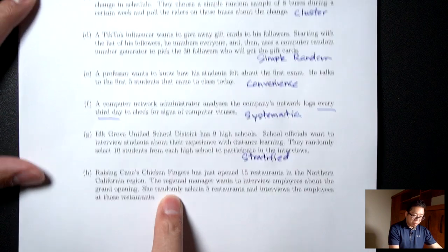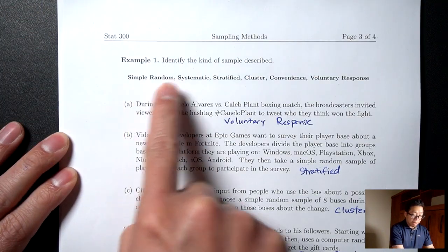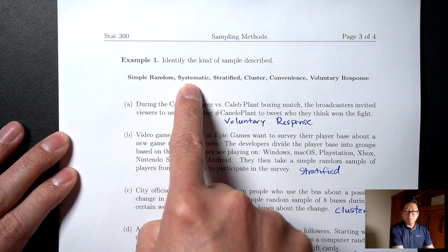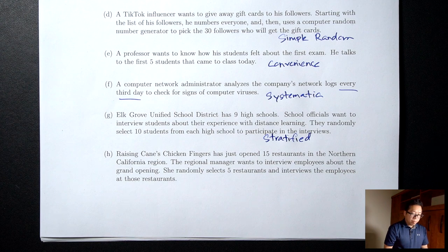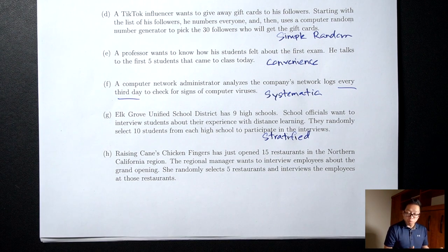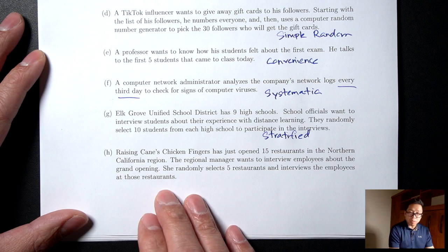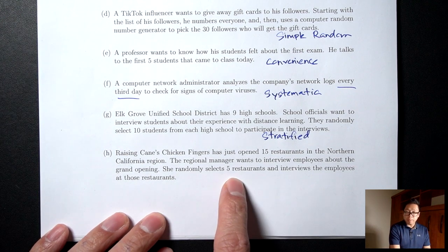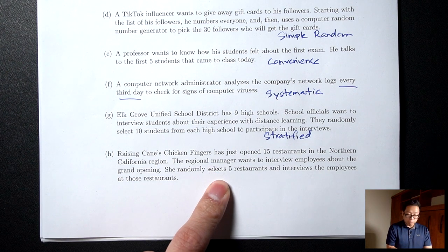I see the word 'random,' so this is not convenience or voluntary response. It's not one of the two simple random examples. It's not systematic — no 'every third person' phrase. This is stratified or cluster. The grouping here is by restaurant — employees are grouped by which restaurant they work in. The question is whether we have representatives from each restaurant. She randomly selects five restaurants and interviews employees at those restaurants. There are 15 restaurants total, so we don't have representatives from the other 10 restaurants. Because we don't have representatives from every restaurant, this is cluster.